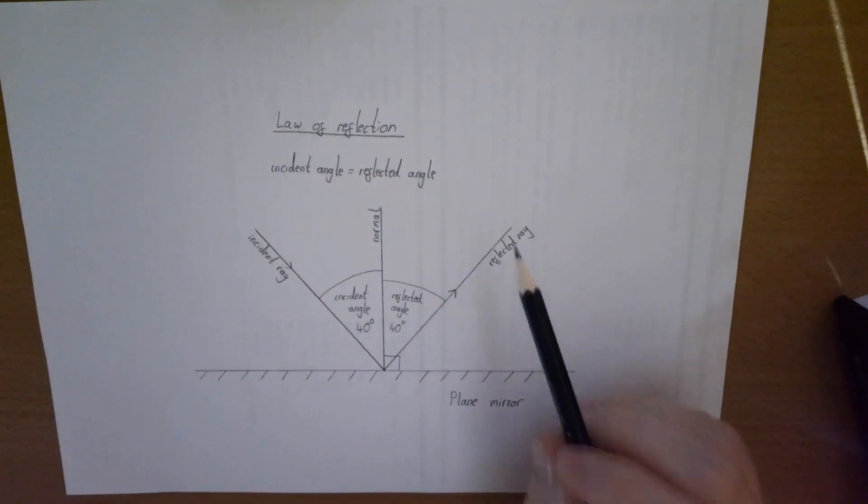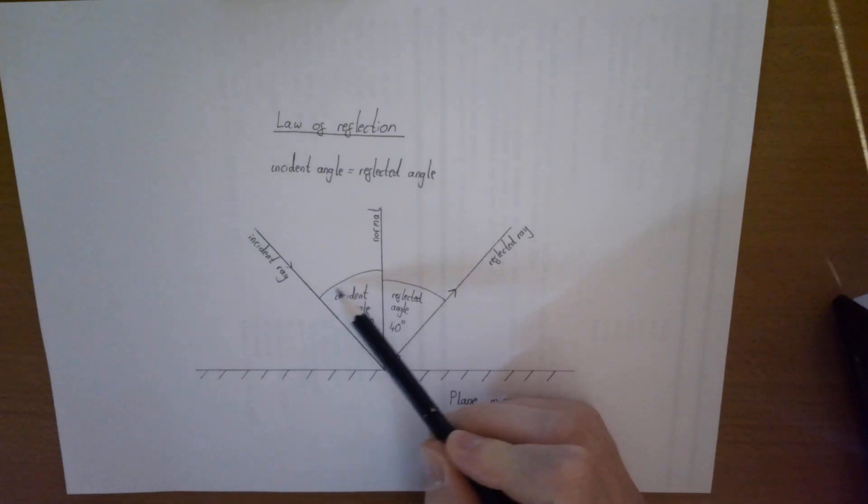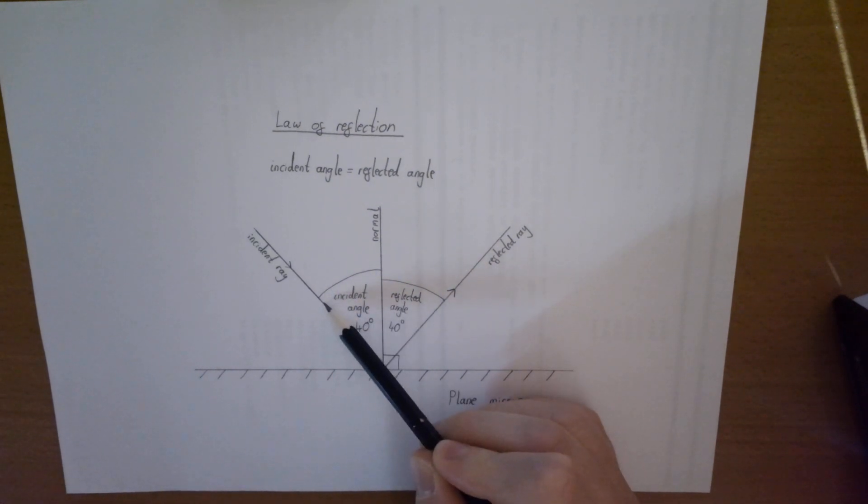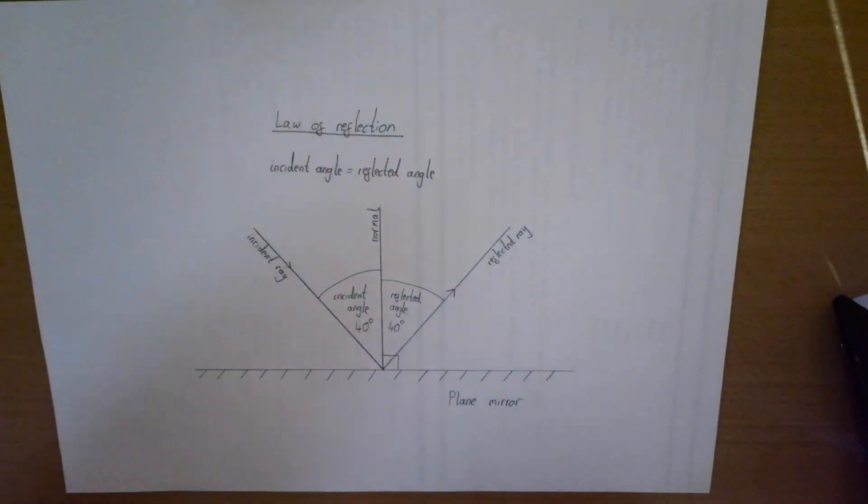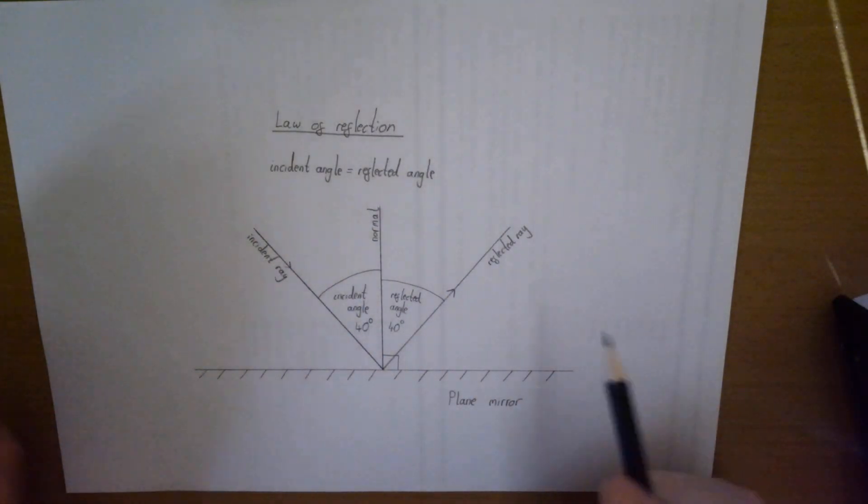The law of reflection says that the angle of incidence, which is this angle here between the incident ray and the normal, is equal to the angle of reflection between the normal and the reflected ray. That is the law of reflection - incident angle equals reflected angle in all cases. We are going to do an investigation to check that.